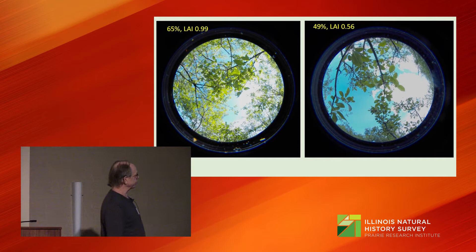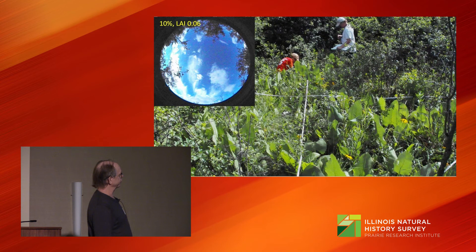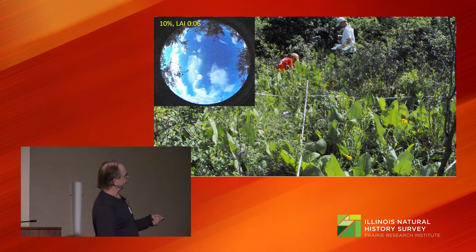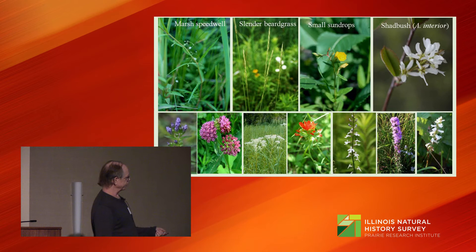I've been doing floristic surveys at this site for a number of years, and have recorded over 440 species of vascular plants, including four species listed as threatened by the State Endangered Species Protection Board, shown here at the top. Three species on the right show up quite regularly in vegetation sample plots. Some of the species across the bottom are common SNAPs that we find across the site.